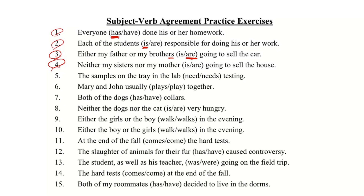'Mother' is closer to the verb, so we use the singularity of 'mother' and say 'is.' Number five: the samples on the tray in the lab — 'the samples' is the subject, that's plural, so we need a plural verb.